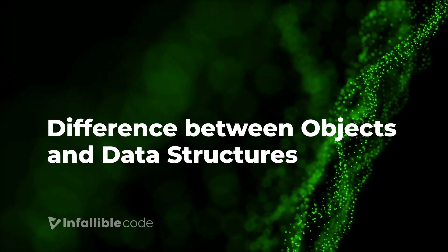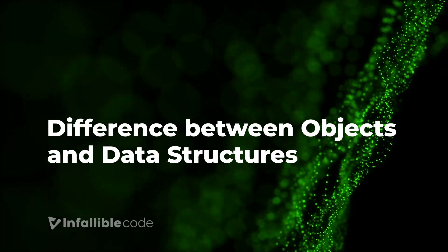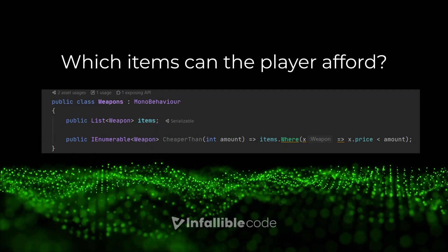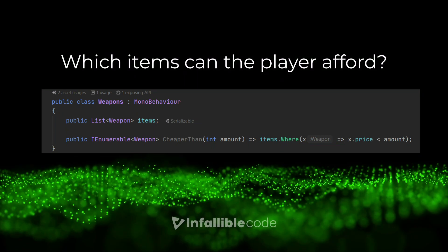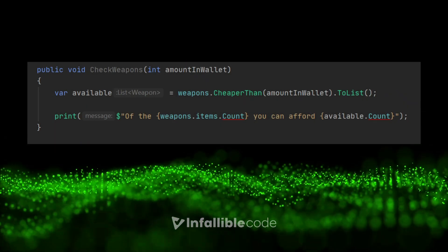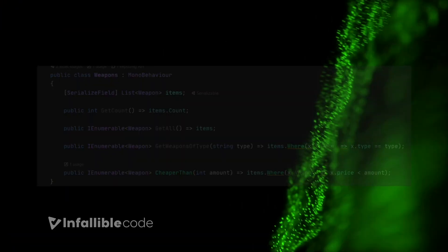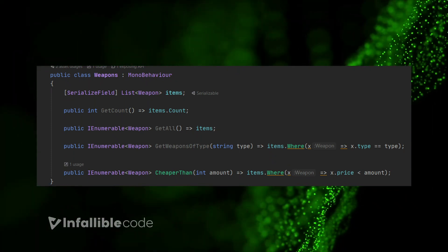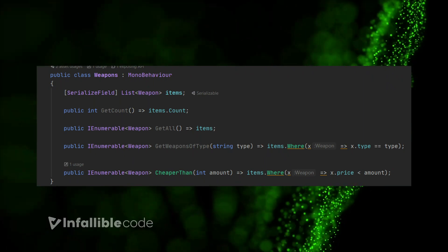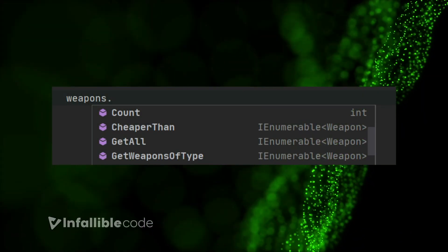Which brings us to the difference between objects and data structures. Data structures simply store data — in general, they're considered passive. In contrast, objects add behavior to that data, allowing you to perform operations and make it easier to use and work with. Say for example, a common request was to ask which items a player could afford — like in a shop. We could use this snippet of code here. Now that we're wrapping our data structure in a weapons object, we should no longer be talking to the data structure at all. Any operations we need to perform should be things that we choose to allow or expose on the weapons object itself. So let's make a few small changes. Now our data structure is private — we can't access the items directly. Instead, we can ask for data by calling public methods on our weapons object, which are helpfully listed by our IntelliSense, and called like any other method.